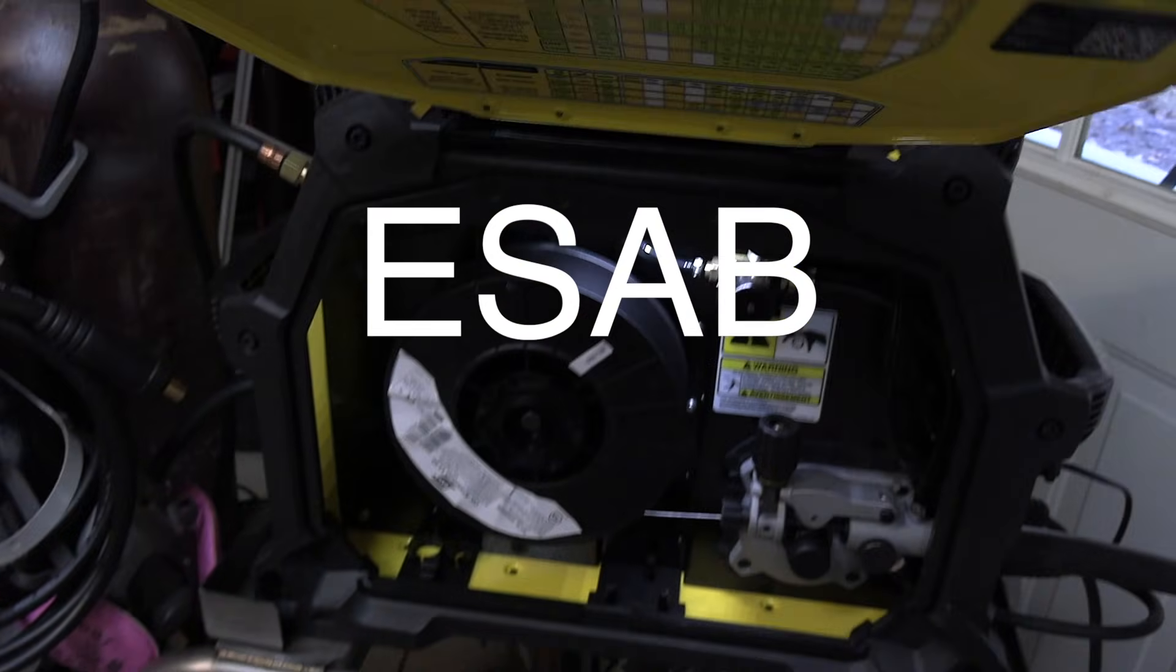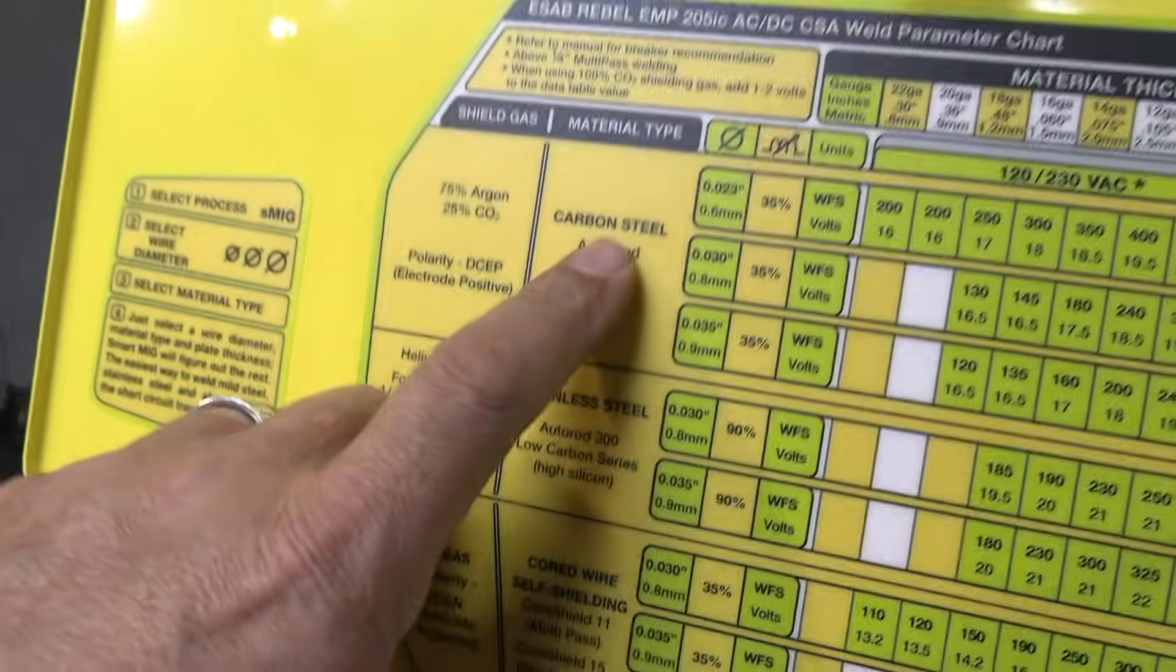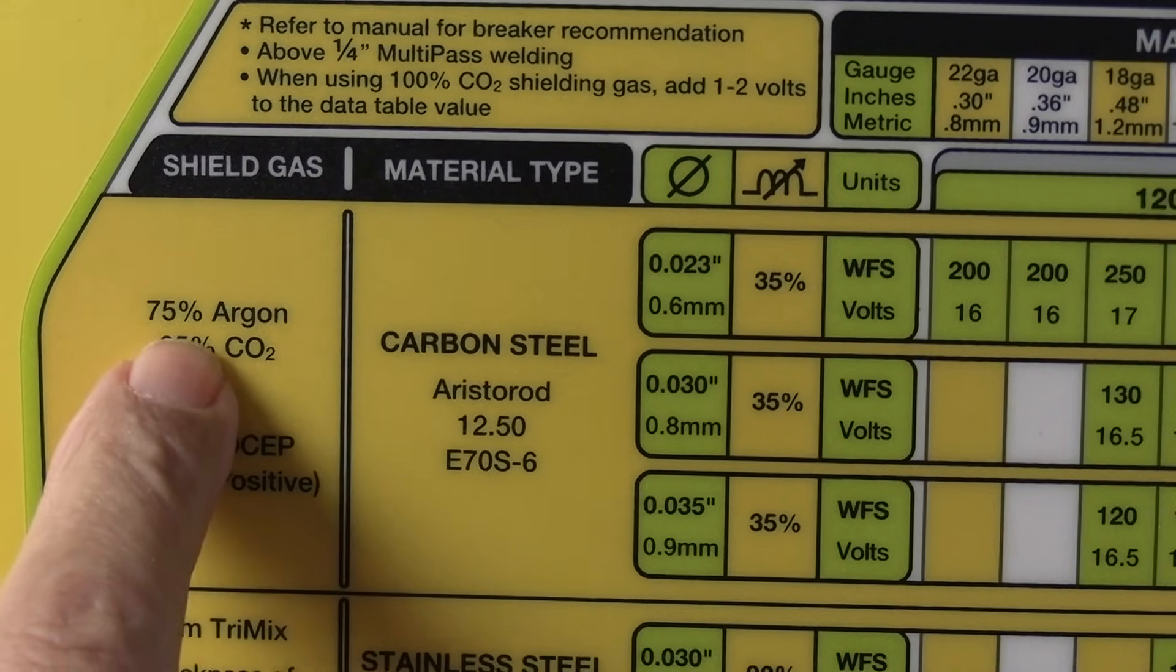I'm using the Rebel 205 today. It's the ACDC model. It does ACDC TIG, MIG, STICK, and all that.